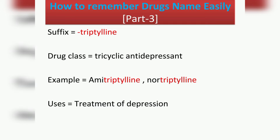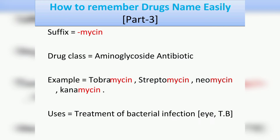The next suffix is '-triptyline', which belongs to the drug class tricyclic antidepressants (TCAs). Examples include amitriptyline and nortriptyline, and their use is the treatment of depression.